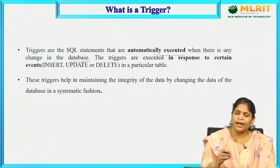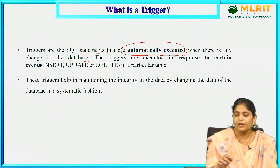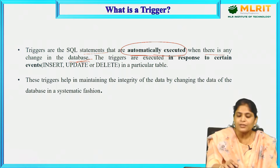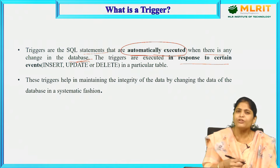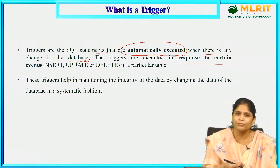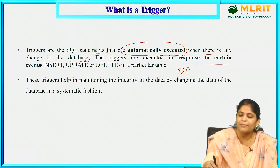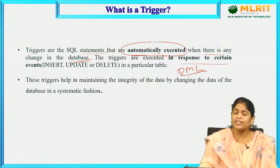How can we identify that triggering? Triggers are SQL statements that are automatically executed when there is any change in the database. Triggers are executed in response to certain events — whenever we do something with the database, either insertion, deletion, or update. These are DML commands. By executing these commands, the trigger will be executed or activated. These triggers help in maintaining the integrity of data by changing the data of the database in a systematic fashion.